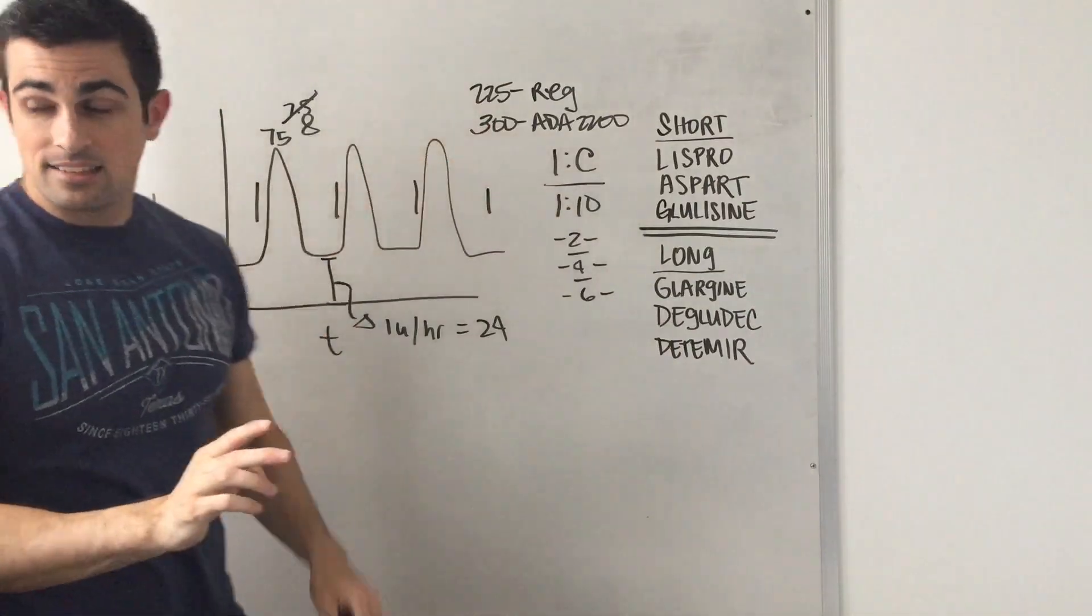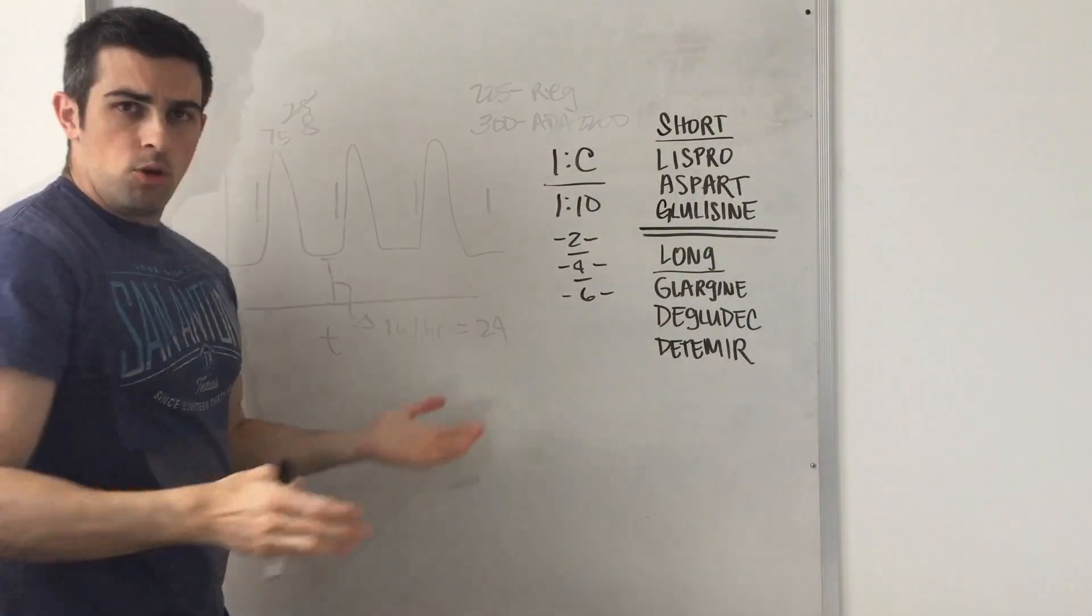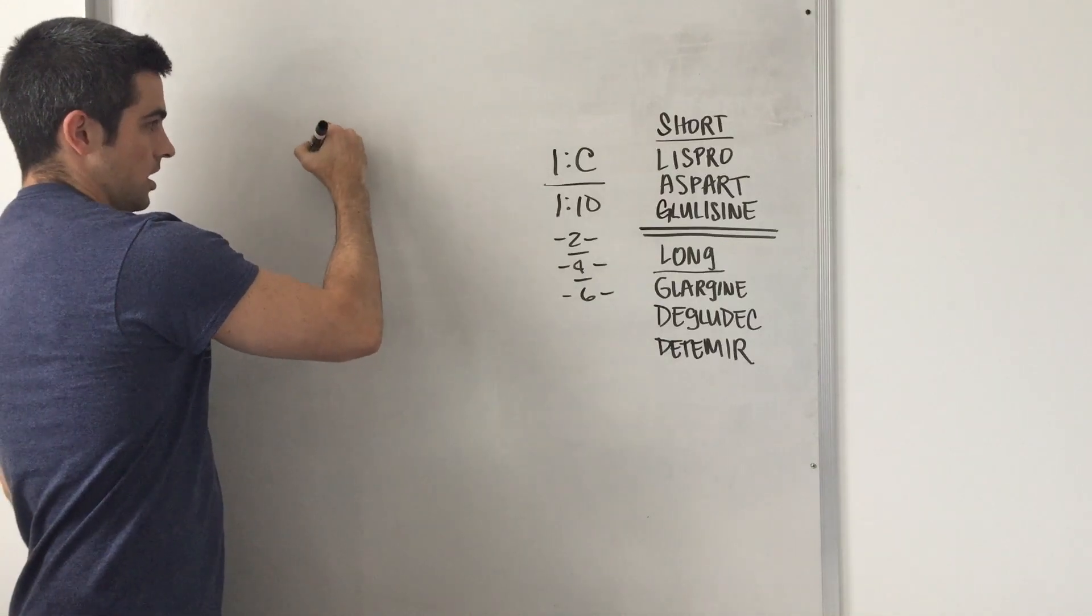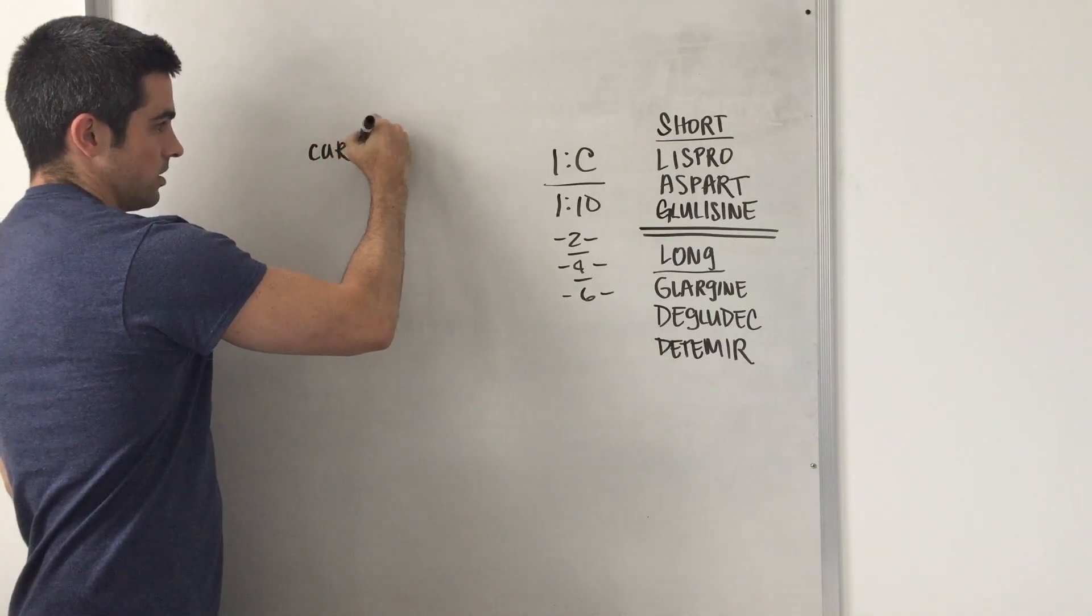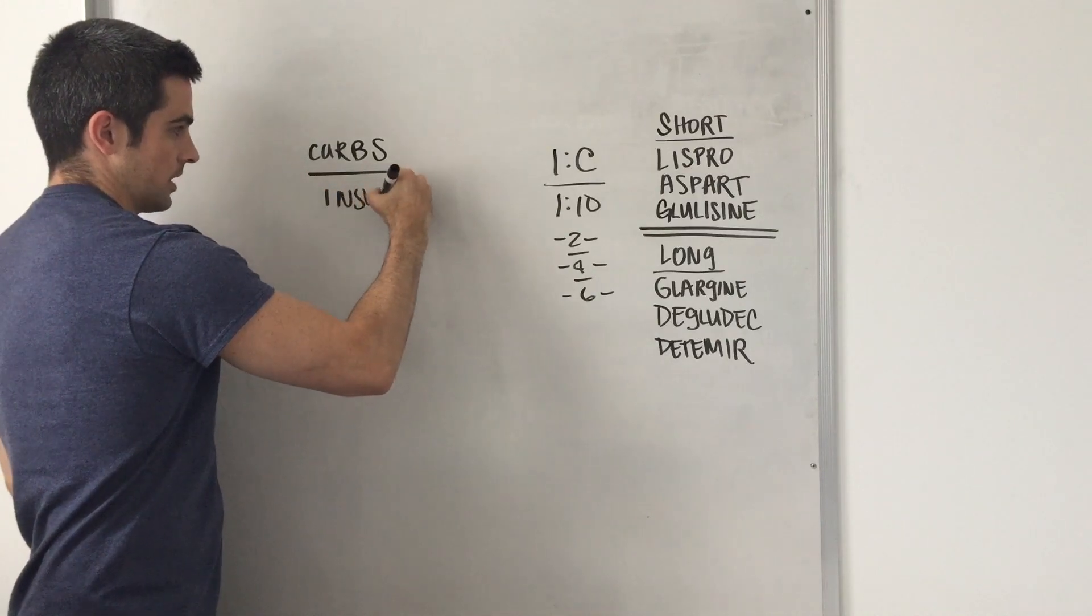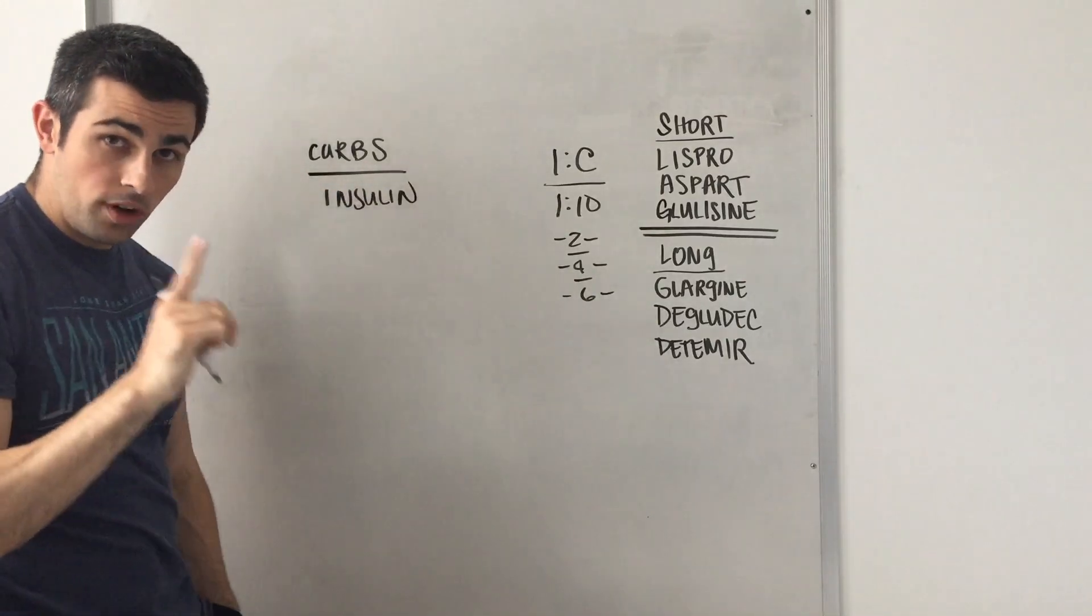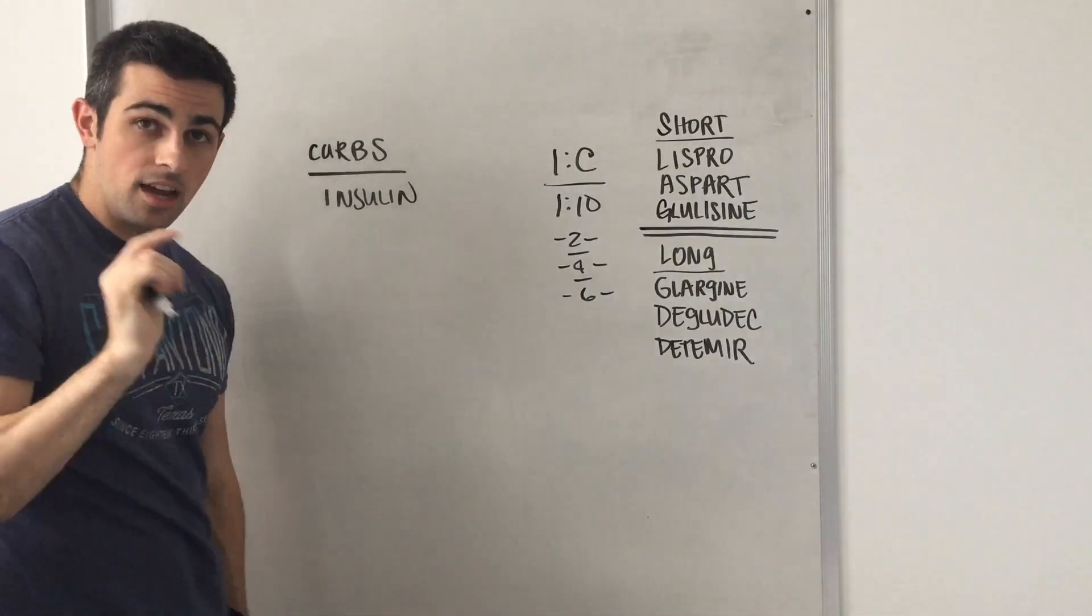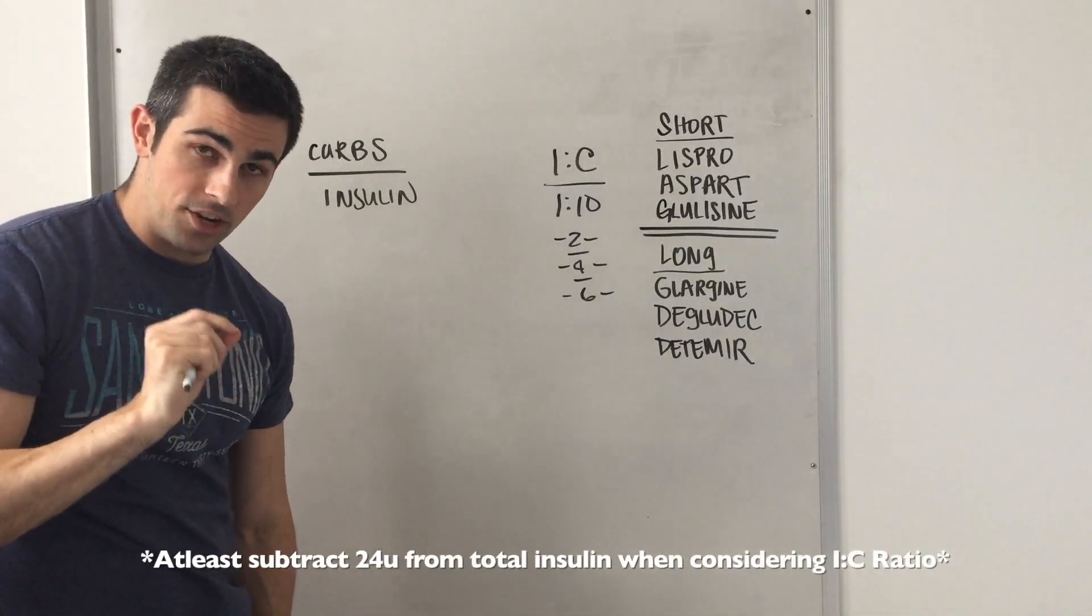And now I'm going to go a little bit into the insulin and carb ratio. So going back to the insulin and carb ratio, the number of carbs over insulin. Now it's important to understand that this is only prandial insulin. It does not include your basal level that you're giving.